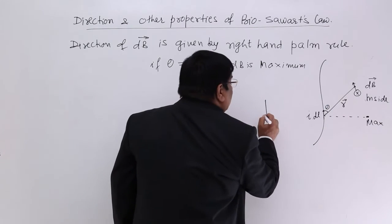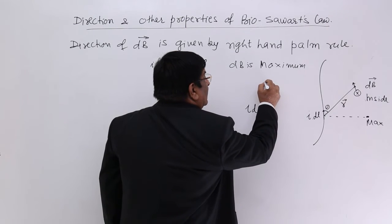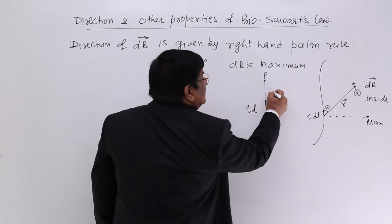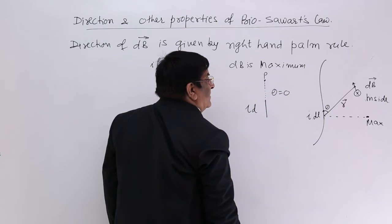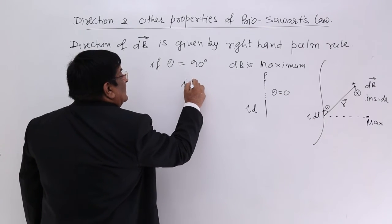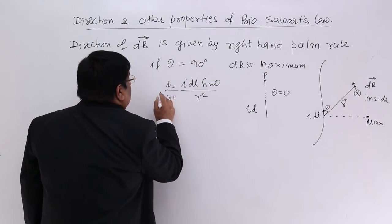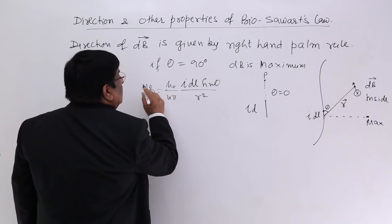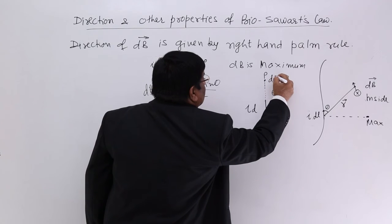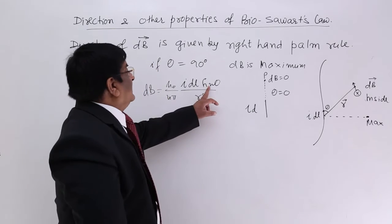But if this is a current element IDL and I take my point here P. What is the magnetic field here? For this theta is equal to 0. If theta is equal to 0, then my formula mu_0 upon 4 pi IDL sin theta upon R square. If theta is 0, the whole thing becomes 0. So at this point it is 0. At this point it is maximum. At 90 degree. That is effect of theta.